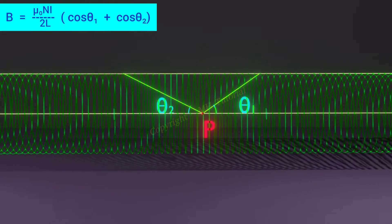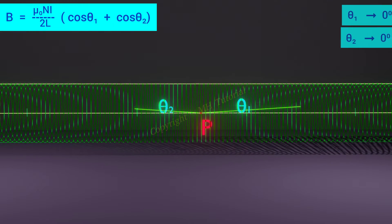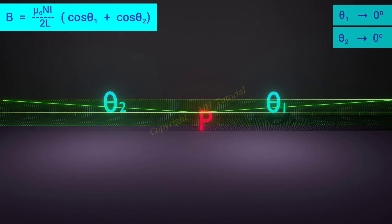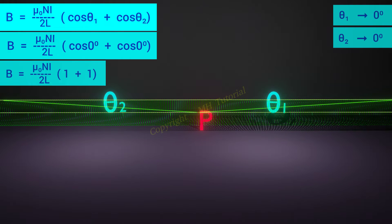If the length of the solenoid is infinite, then theta1 and theta2 tend to 0 degree. And the magnetic field should be like this.